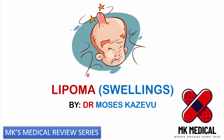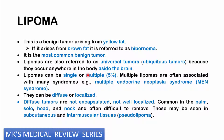Lipomas are pretty much benign tumors arising from yellow fat. If this tumor is actually arising from brown fat, it's referred to as a hibernoma — I think this comes from the word hibernation. Lipomas are actually very common, and in your surgical practice you will deal with them at one point or another. They are the most common benign tumor. Because these tumors could be found everywhere in the body, they are ubiquitous tumors, also referred to as universal tumors. They could be found anywhere in the body, aside from the brain.